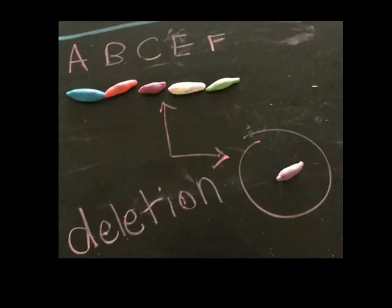The second type of chromosome mutation is a deletion. As it sounds, you're going to delete a gene. So, in this picture, my D gene got deleted. So, everything shifted over to the left. I now only have A, B, C, E, and F.